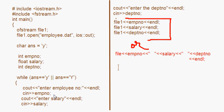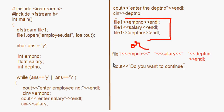Now you have accepted the details of the employee and put it into the file using file1. Since we are inside a loop, after writing the data we write: cout << "Do you want to continue?"; cin >> ans. The user enters their choice into the variable ans. The loop is closed here, and when the loop condition is checked again — while ans == 'y' or ans == 'Y' — if the user enters y, the process repeats for the second employee.